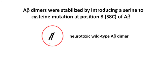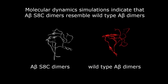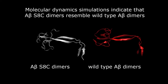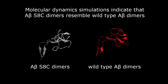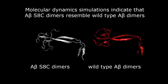We generated a transgenic mouse that expresses A-beta with an artificial mutation where a serine at position 8 of the A-beta peptide is replaced with a cysteine. This A-beta species, termed A-beta S8C, stabilizes A-beta dimers by forming a covalent bond through a disulfide bridge. Molecular dynamic simulations showed that the conformation of wild-type A-beta dimers would be very similar to A-beta S8C dimers.